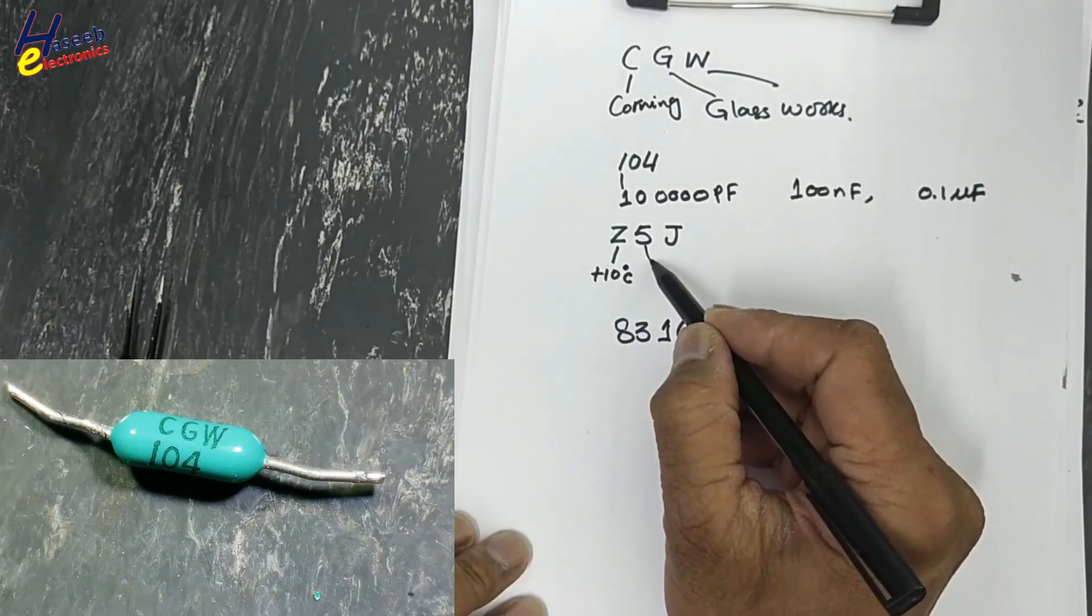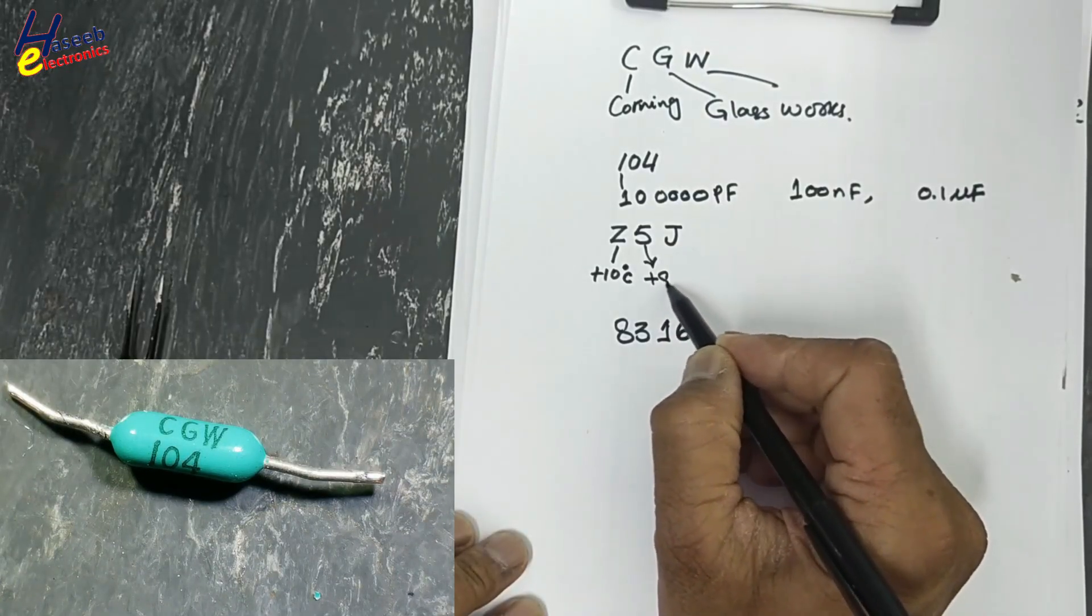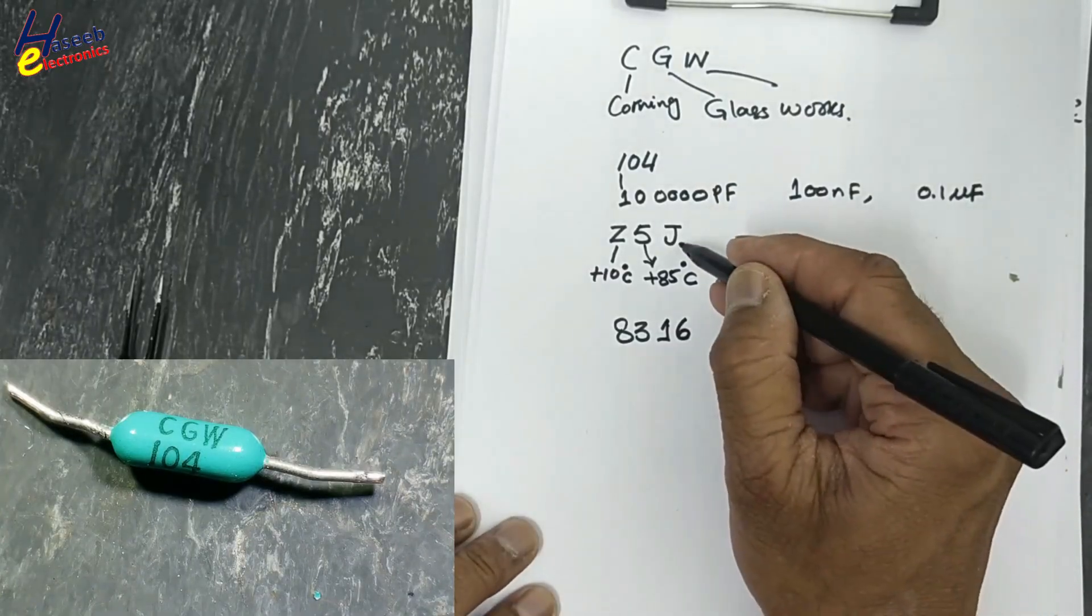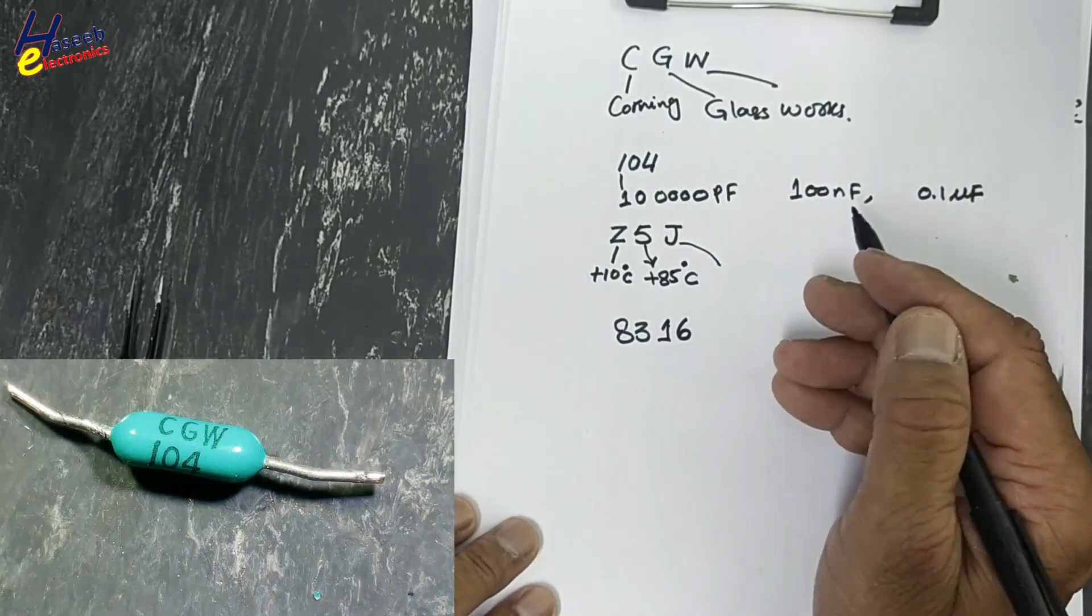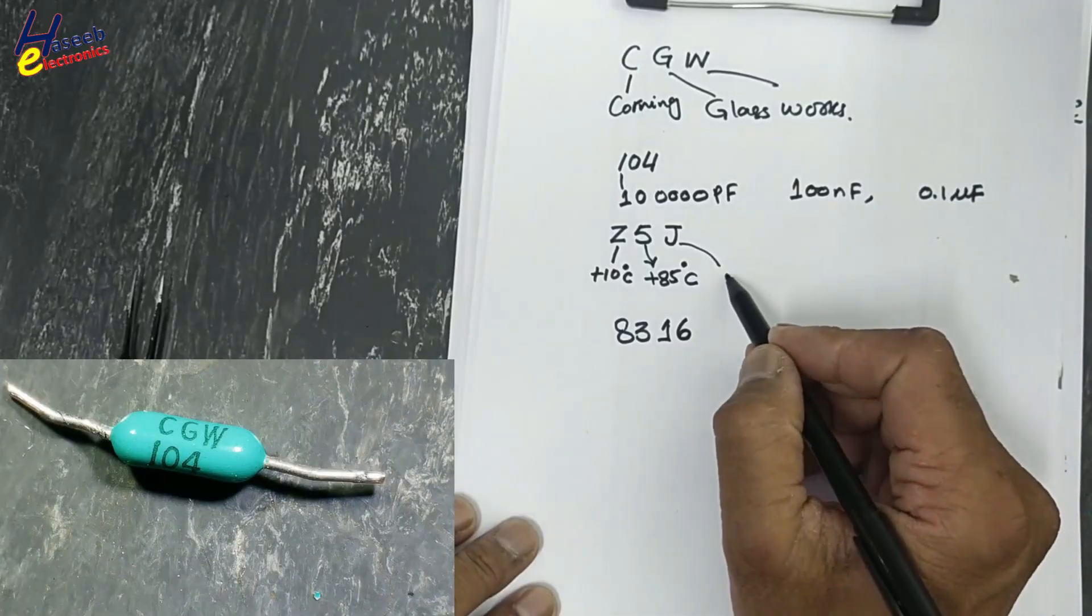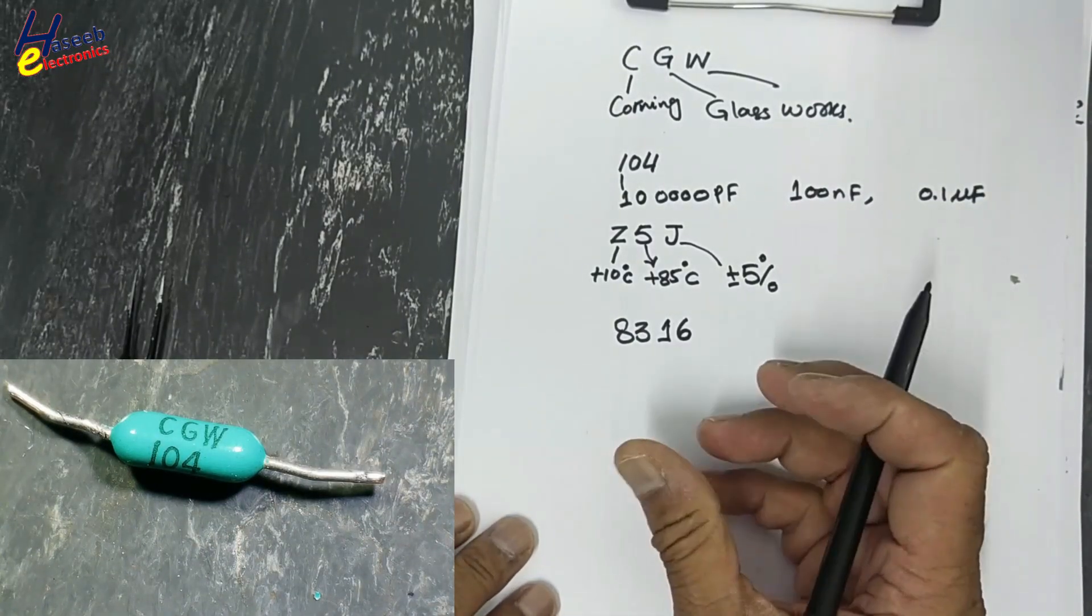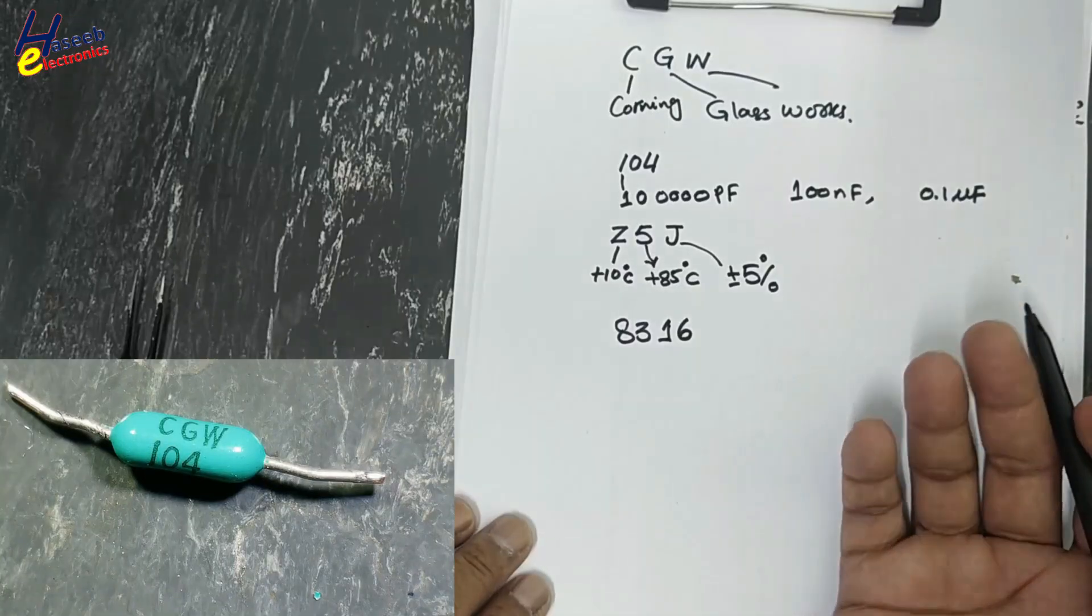5 indicates plus 85 degree Celsius upper limit. J indicates capacitance change tolerance of plus minus 5%. 8316 might be a date code or lot code.